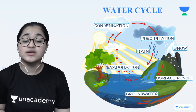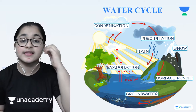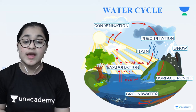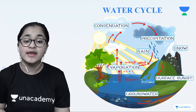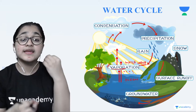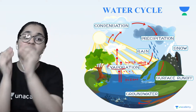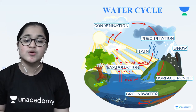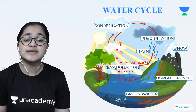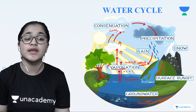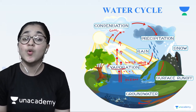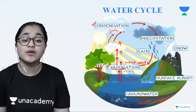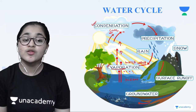When water vapors rise upward, after traveling some distance they start cooling down. This process of cooling down is called condensation. You can remember it this way: when water vapors start becoming cold, that process is called condensation. When water vapors cool down, they turn into water droplets. These small water droplets form clouds.